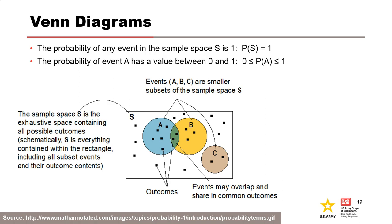Venn diagrams can be very helpful in understanding how different events are related. The rectangular box represents the sample space S, which encompasses all possible outcomes and has a probability of 1. In this example, there are three events: A, B, and C. Event A might be a concentrated leak erosion failure mode, and event B might be a backward erosion piping failure mode — breach can occur by either or both simultaneously, which is why there is overlap between those circles. Event C is mutually exclusive because it cannot occur together with events A or B — perhaps a failure due to an earthquake without a flood, which is often assumed to be mutually exclusive.